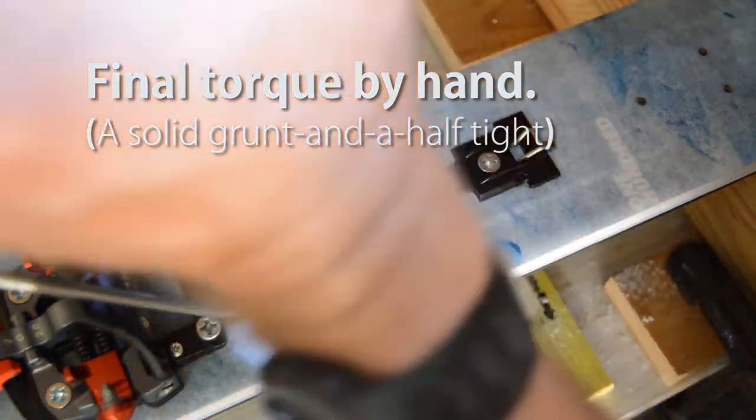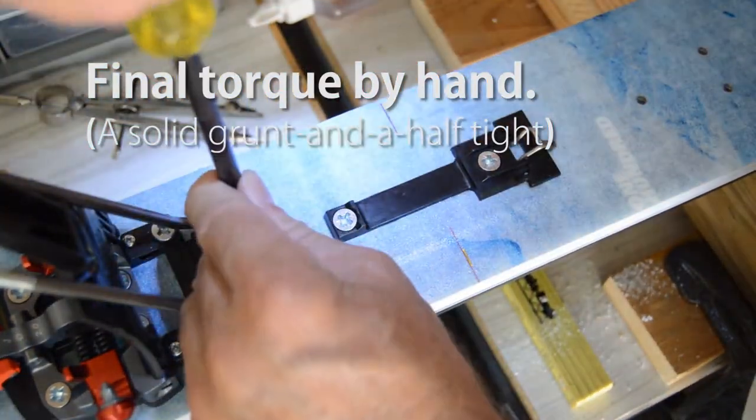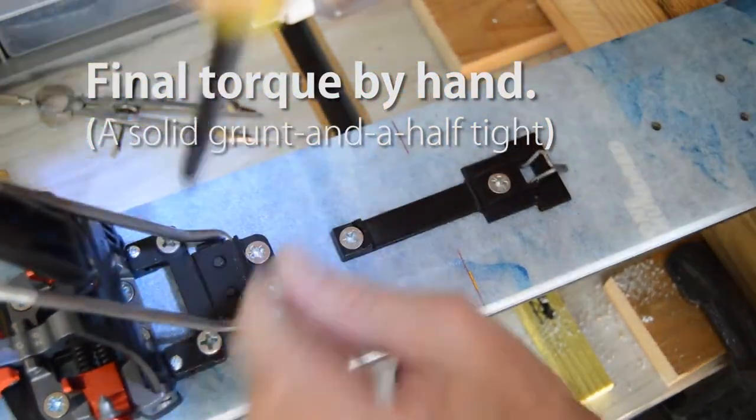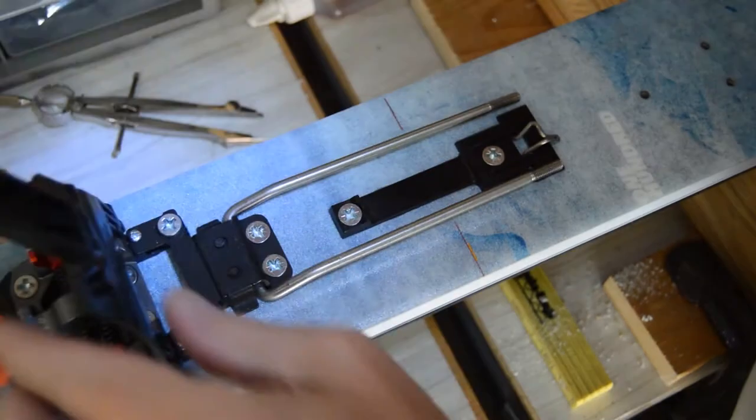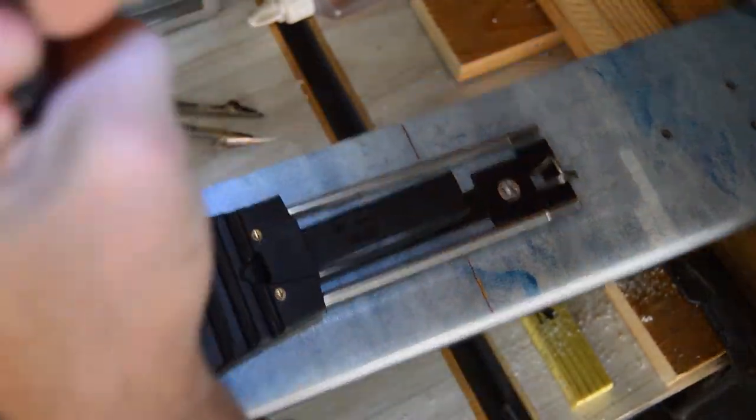And now I'm going to go around, do a final torque on the toe, giving everything a good solid grunt and a half tightening. Now it's easier to add the claw now for the second heel and the springs before you install the heel post.